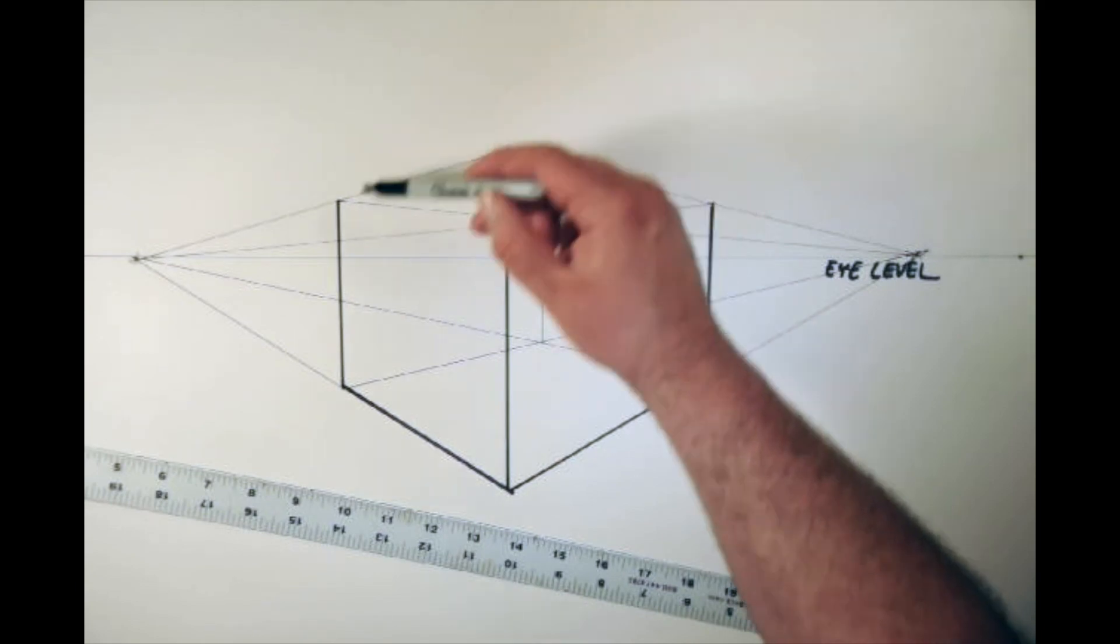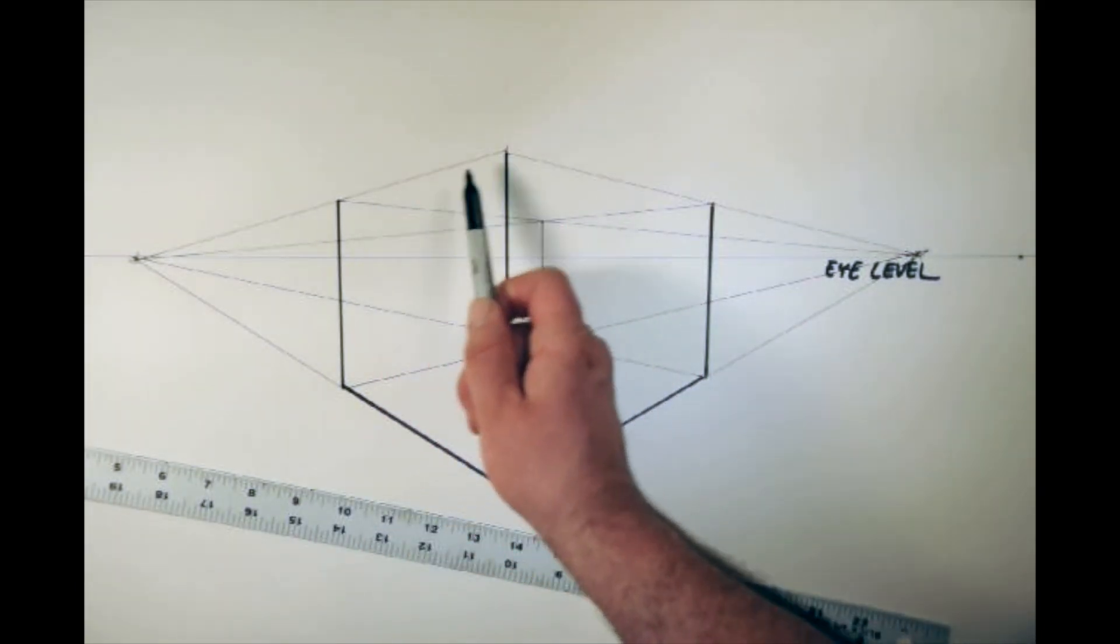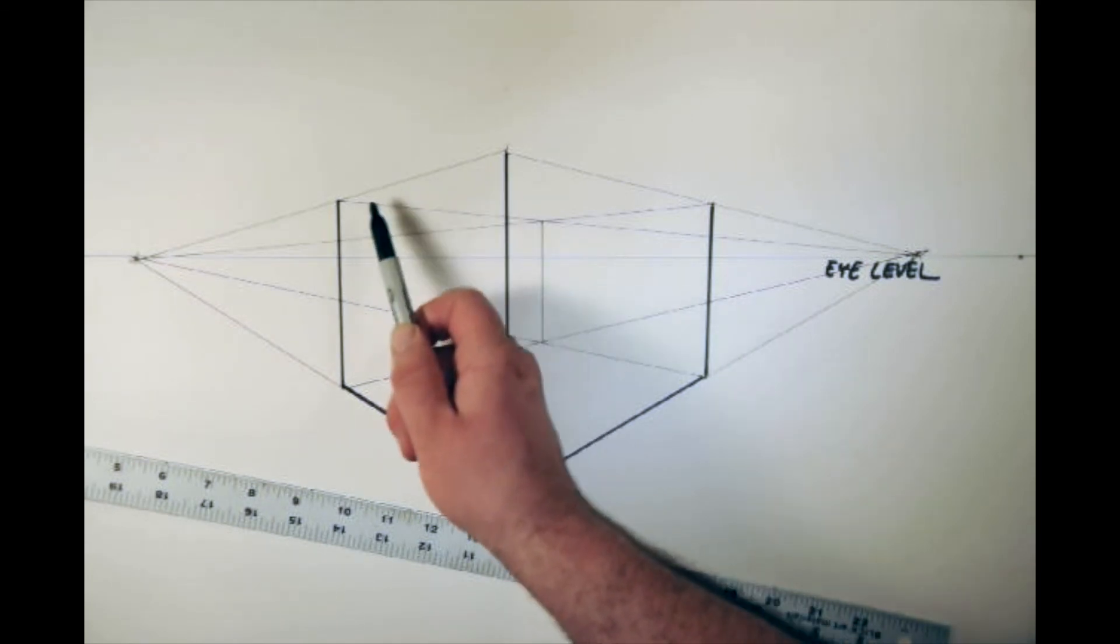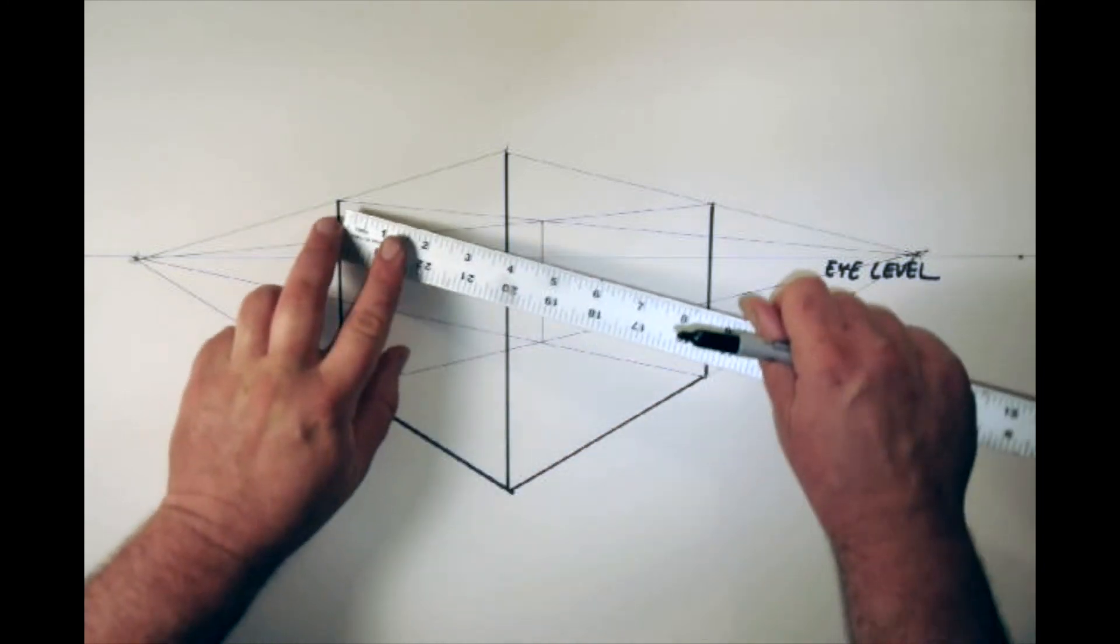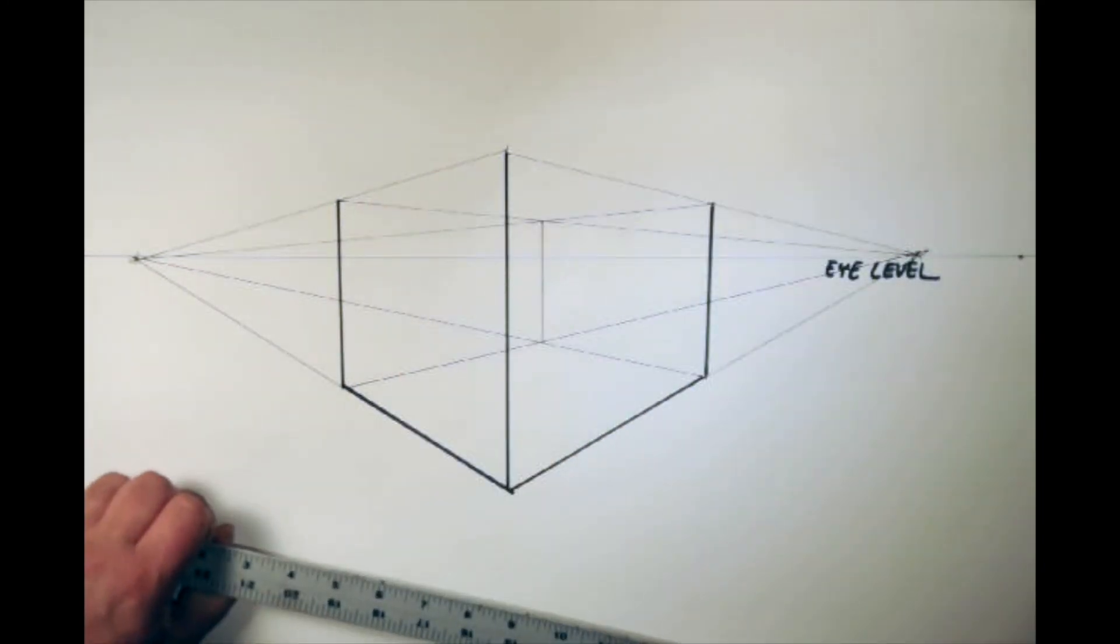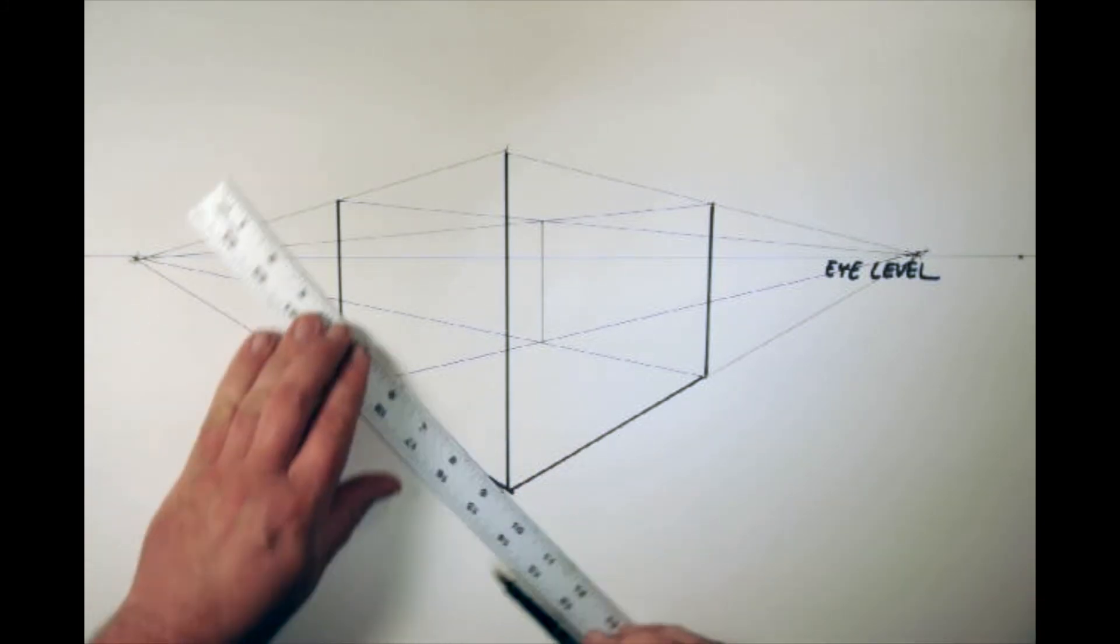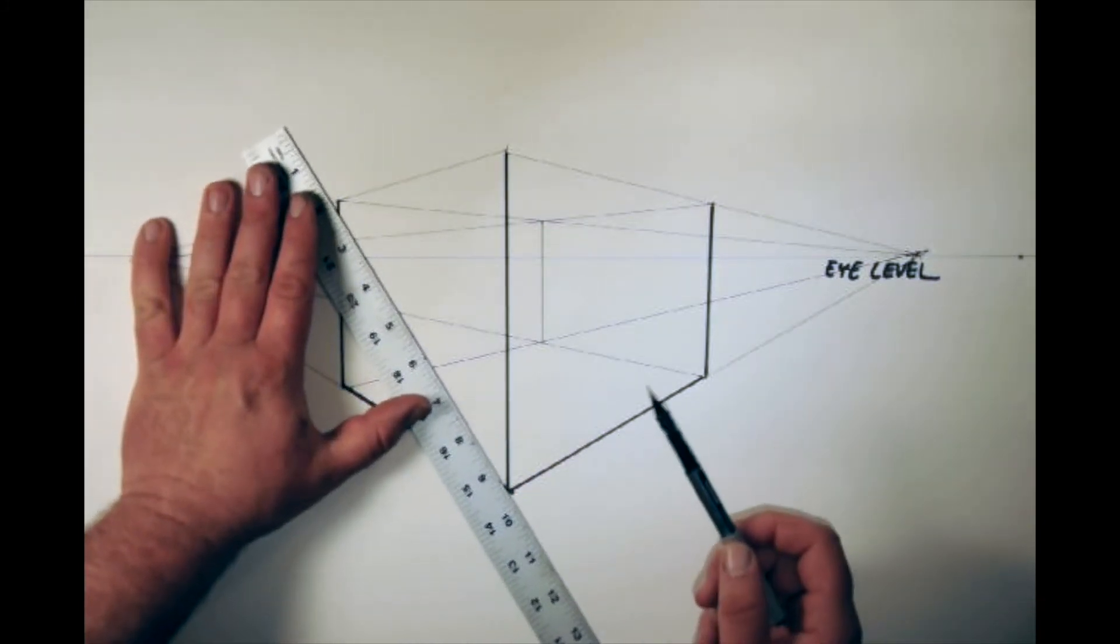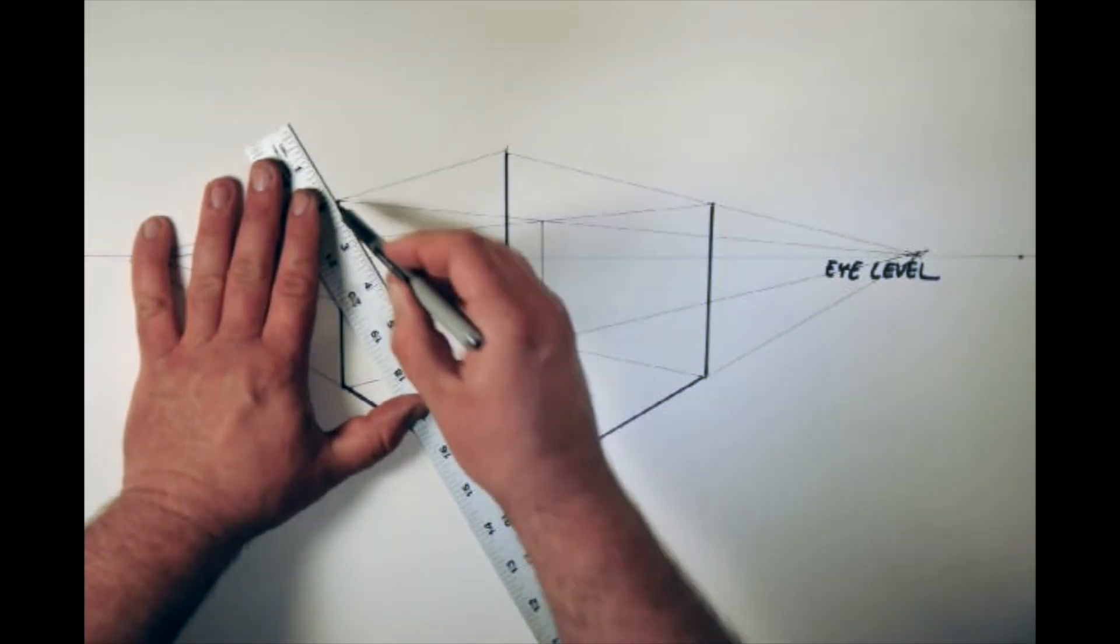So now if I was going to add a roof to this structure, I need to find the center of this line here. So the way I do that is I don't measure. See, measuring is actually going to give me the wrong dimension. I need to plot the center in a different way. And the way I do that is I draw an X from the corners.